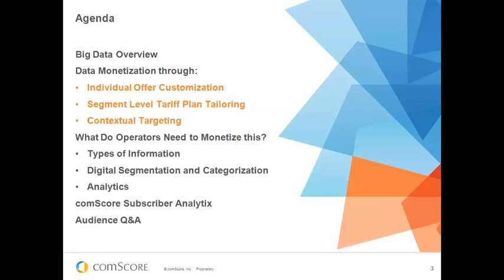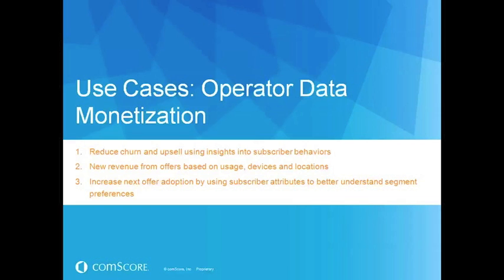We'll also step back to understand what needs to happen to monetize all of that data — what type of information is available, how it can be segmented and categorized, and how analytics and insights can be generated from it. Finally, I'll give a brief overview of Comscore's subscriber analytics platform, a software solution to deliver these insights within this environment. So, three use cases for monetization of data within the carrier space.